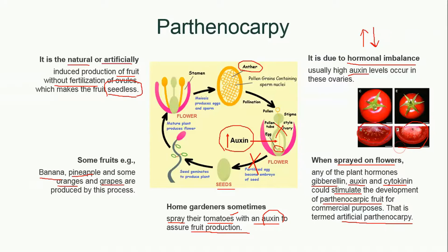A simple spray of auxin on the tomato plant can lead to the development of seedless tomatoes, and in this way we can help prevent kidney stones. So next time you eat any fruit with no seeds, remember that parthenocarpy is the process behind it. That was all about parthenocarpy — see you in the next video.